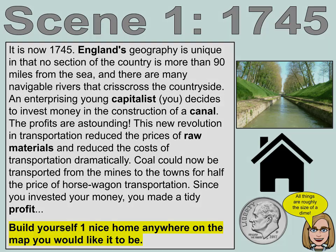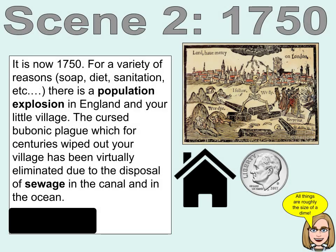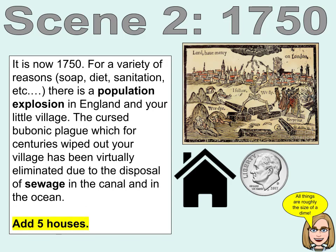Scene 2. It is now 1750. For a variety of reasons — soap, diet, sanitation, etc. — there is a population explosion in England and your little village. The cursed bubonic plague, which for centuries wiped out your village, has been virtually eliminated due to the disposal of sewage in the canal and in the ocean. Add five houses.